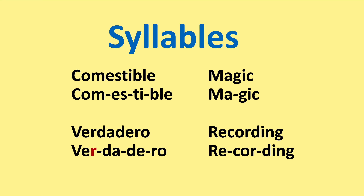A syllable is basically how you break up a word when you have the sounds. For example: comestible — co-mes-ti-ble; mágico — má-gi-co; verdadero — ver-da-de-ro; recording — re-cor-ding. The highlighted R is the R at the end of the syllable.